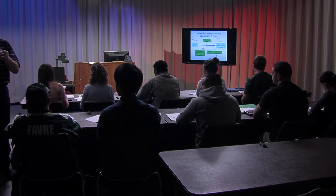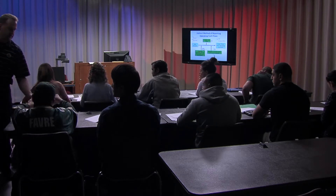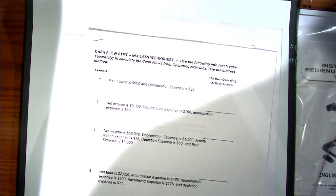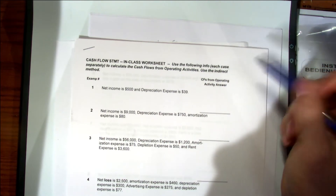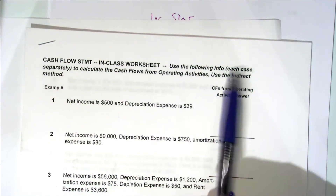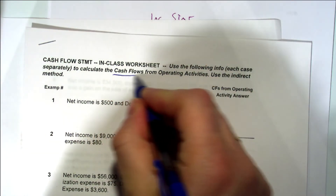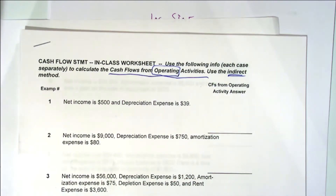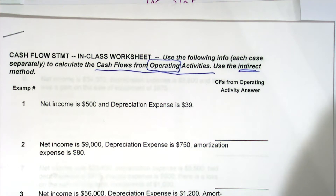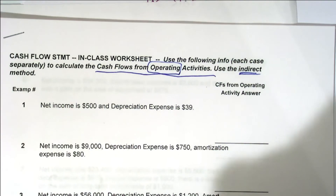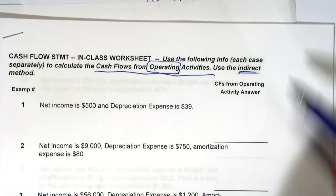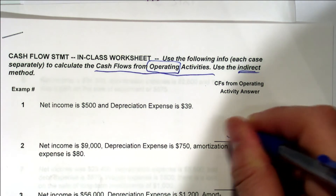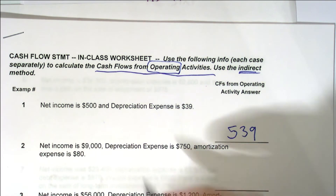For you folks at home, I want you to have this worksheet and work along. This worksheet says: use the following information — each case is separate — to calculate the cash flows from operating activities using the indirect method. Let's do number one together. Net income is $500 and depreciation expense is $39. The cash flows from operating activities is $539. But I want you to write it out showing net income of $500 plus depreciation expense of $39.